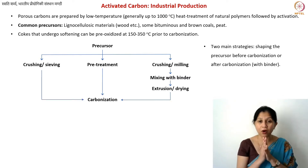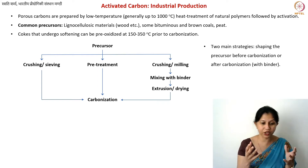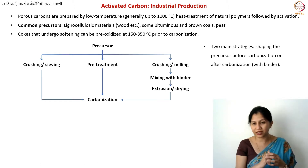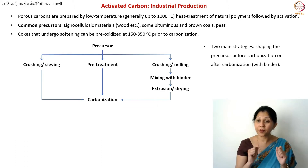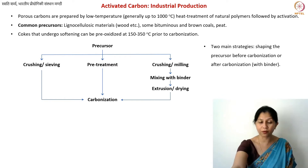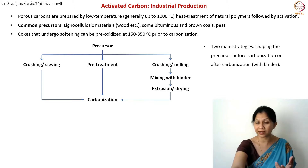Now you perform the carbonization. You can carbonize the particles mixed with binder and shaped into cylinders, or if you wanted powdered activated carbon, after crushing and sieving you can directly carbonize that. The carbonization is not performed at as high a temperature as you would use for graphite — relatively lower, around 1,100 degrees centigrade.